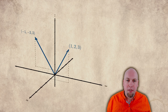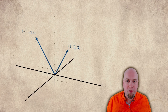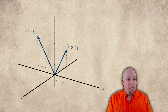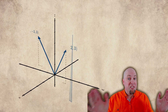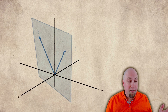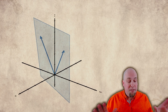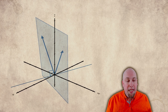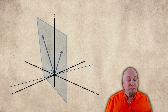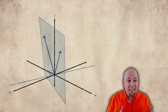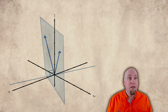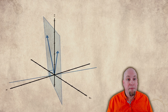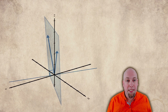It's maybe helpful to think geometrically about what we just did here. These two vectors that we started off with, (1, 2, 3) and (-1, -3, 3), those lie on some plane in three dimensional space — there's a unique plane that contains both of them. By asking for a vector that's orthogonal to both of them, we're asking for a vector that's orthogonal to that plane, perpendicular to that plane.